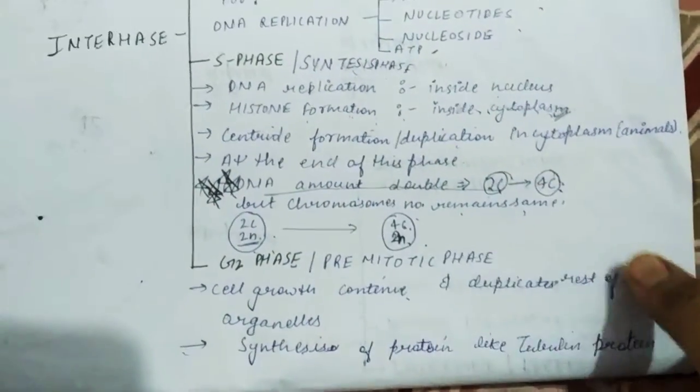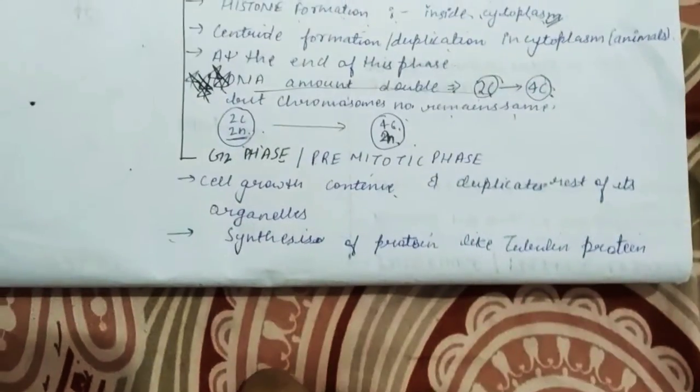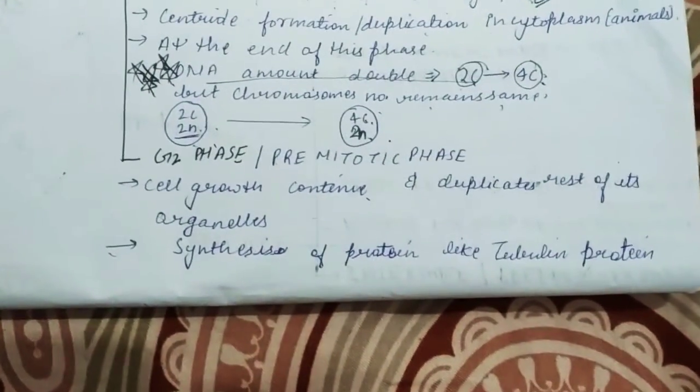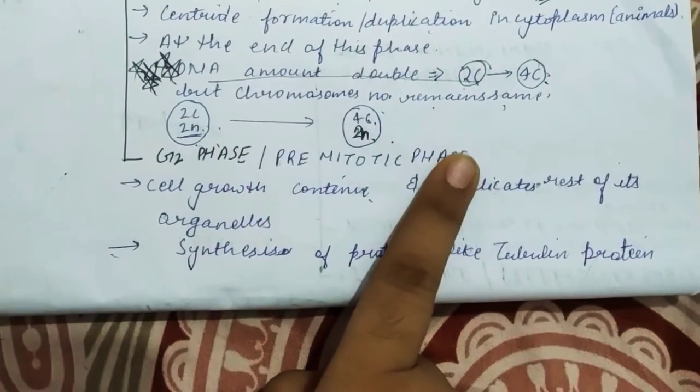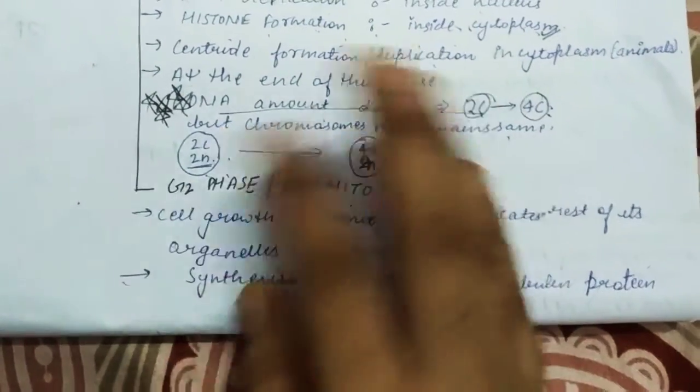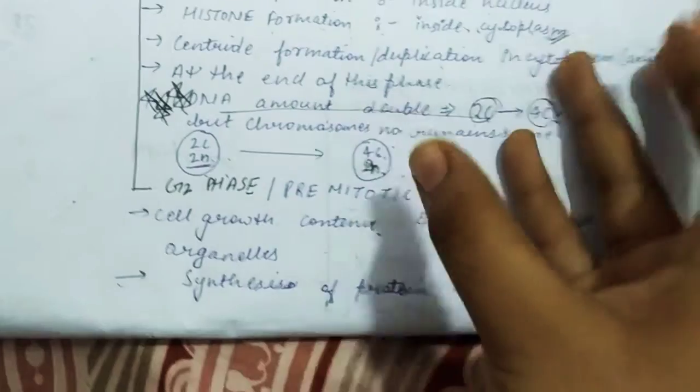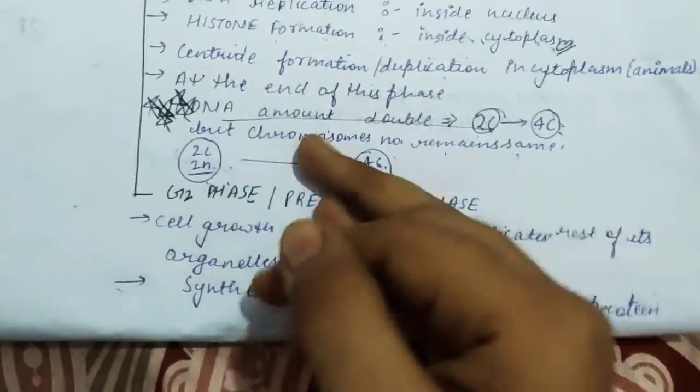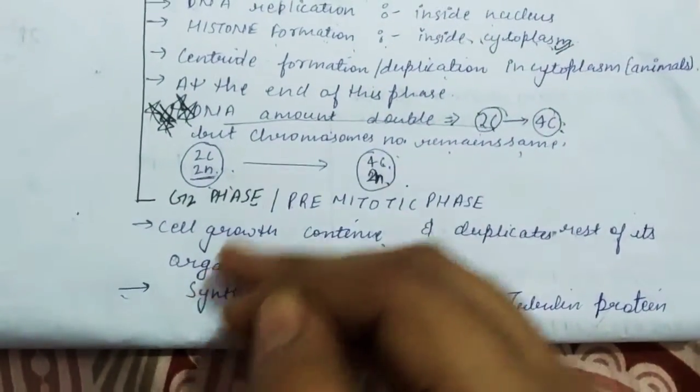This was all about S phase. Now, the last phase of our interphase is G2 phase. It is called pre-mitotic phase. The growth of the cell continues. The cell will grow, its DNA will duplicate, and the cell will divide. We have divided these phases into G1 phase, S phase, and G2 phase.